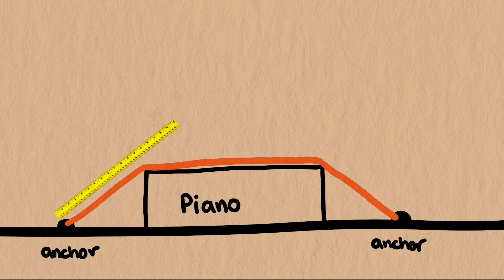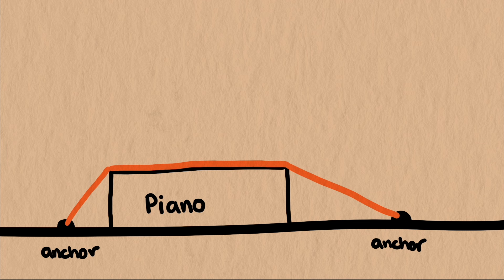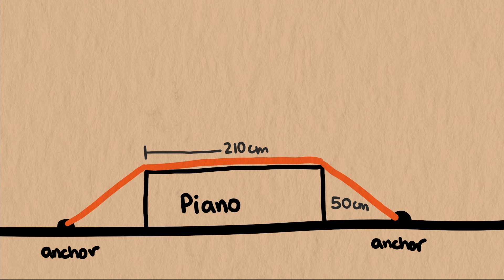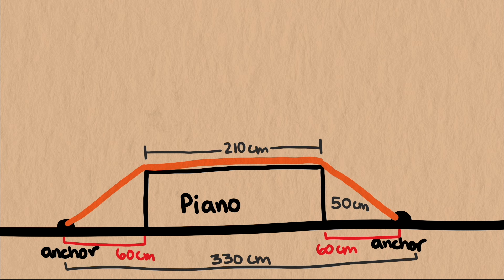I'm going to put up some reasonable measurements and do some calculations. We will do two situations, one where the piano is near the middle, and one where the piano is closer to an anchor. Let's say the piano is about 50 centimeters wide and 210 centimeters in length, and our anchors are 330 centimeters apart. That means if the piano is centered, we have 60 centimeters on either side between each anchor and the piano.